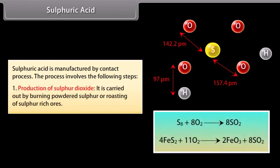Production of sulphur dioxide: It is carried out by burning powdered sulphur or roasting of sulphur-rich ores.